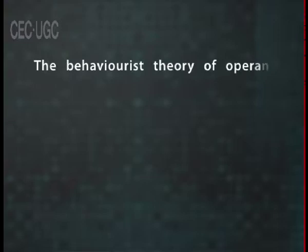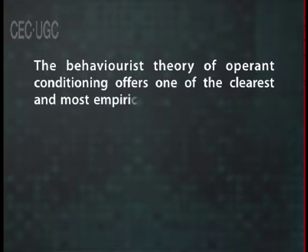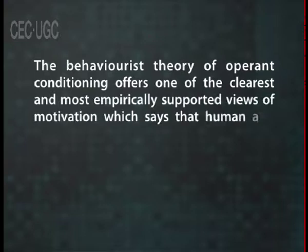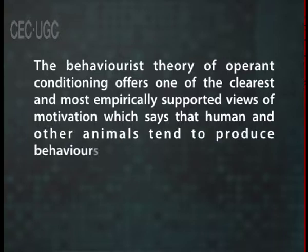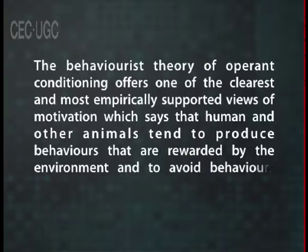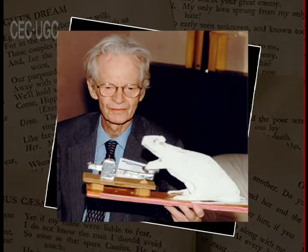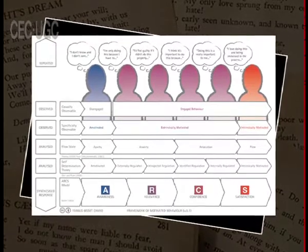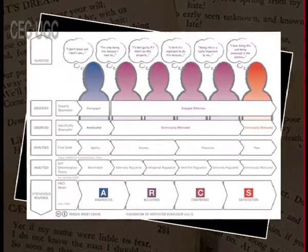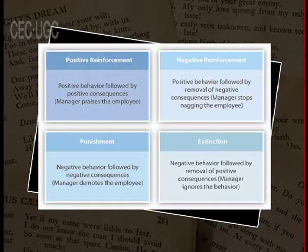The behaviorist theory of operant conditioning offers one of the clearest and most empirically supported views of motivation, saying that humans and other animals tend to produce behaviors that are rewarded by the environment and avoid behaviors that are punished. According to Skinner, reinforcement means strengthening of behavior by giving the right kind of stimulus to the individual after he performs desirable behavior. To motivate involves either reinforcing desired behavior by way of giving reward, or not reinforcing undesirable behavior. Skinner mentions a number of reinforcers — positive, negative, primary and secondary — which are used to shape the behavior of the organism.